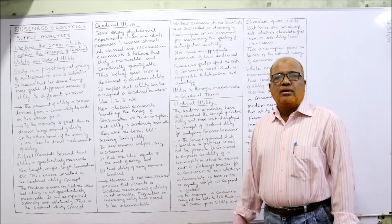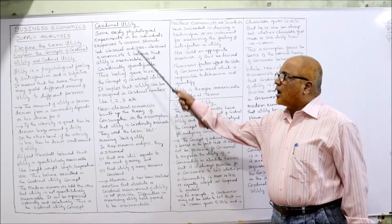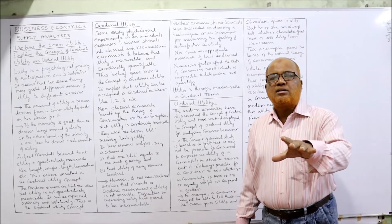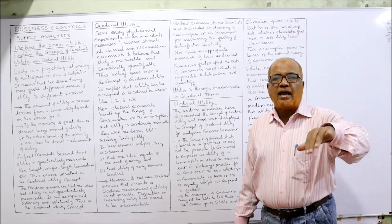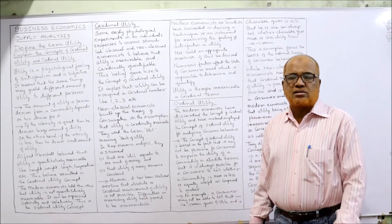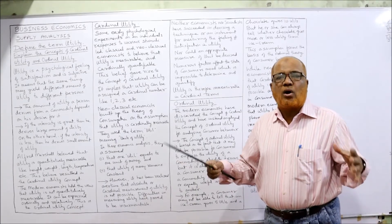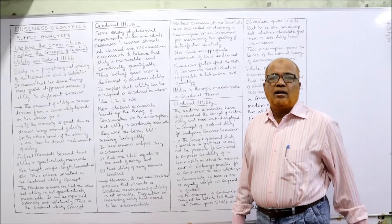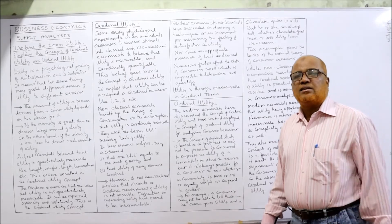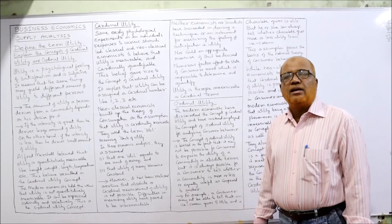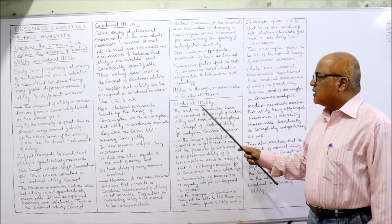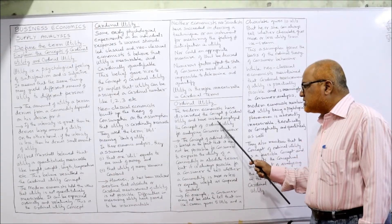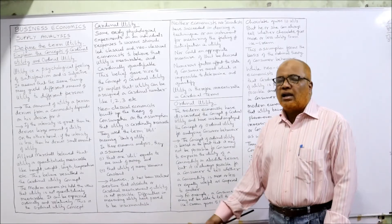Now we come to ordinal utility. Remember, cardinal utility means utility is measurable — it was propounded by classical and neoclassical economists. But there are a number of drawbacks of the cardinal utility concept. Modern economists say that utility is not measurable — it is immeasurable. So modern economists have discarded the concept of cardinal utility and have instead employed the concept of ordinal utility for analyzing consumer behavior.